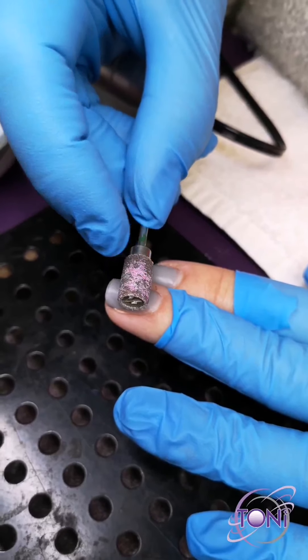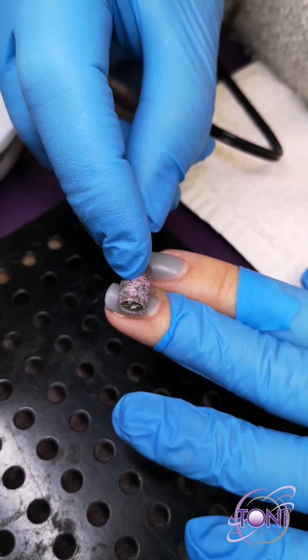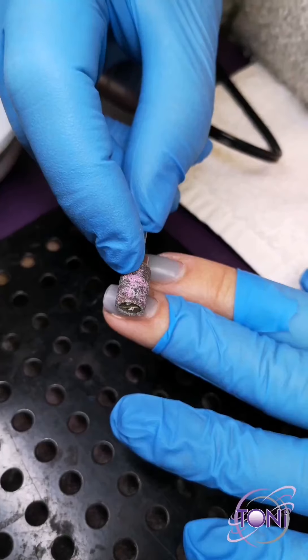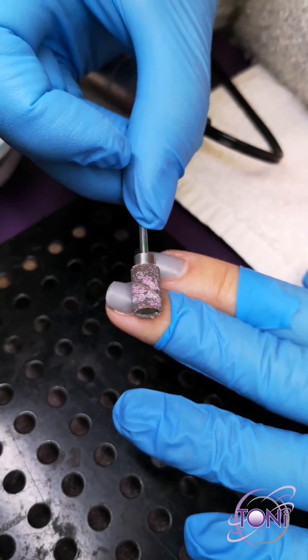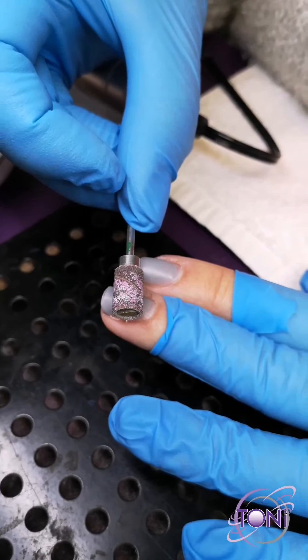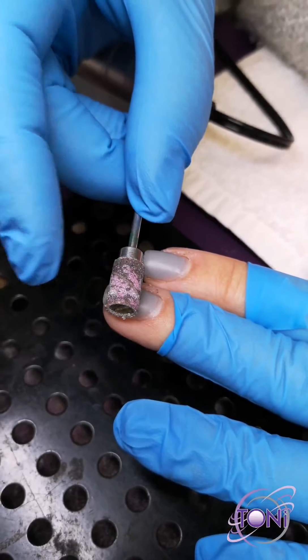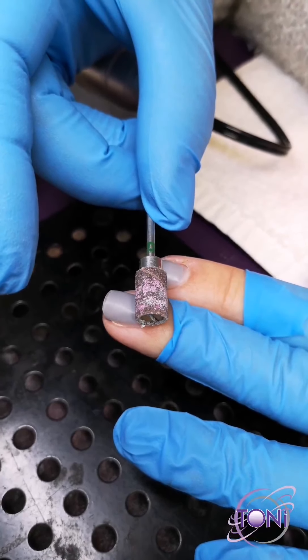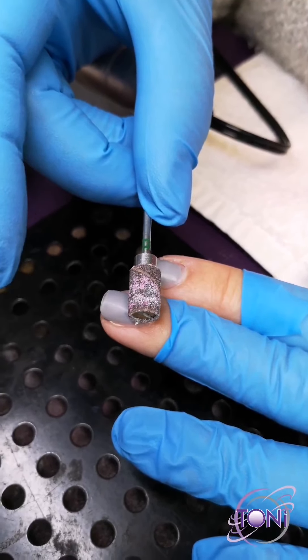What's happening here is the gel polish component of the product is actually heating up and then melting back to your arbor band. So you're actually filing product on product. That's not going to get you too far and it's also going to cause a lot of heat for the customer.